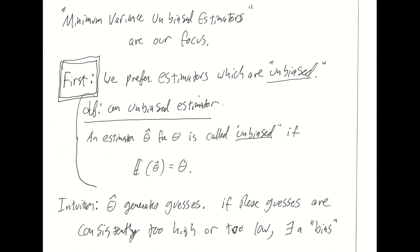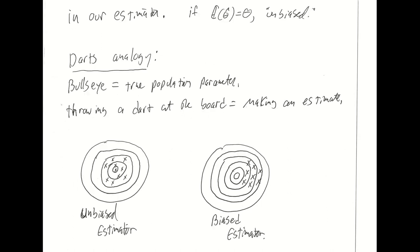The intuition is that our point estimator generates guesses for us as to what the population parameter is, and we would not want those guesses to be on average too high or too low. If this machine consistently guesses too high, we call that a bias built into the estimator. Similarly, if it consistently generates guesses less than theta, it has a negative bias. An unbiased estimator is one whose guesses are on average right on theta — it may guess too high once or too low once, but on average it doesn't guess too high more often than it guesses too low. It's not necessarily going to get it right every time, but the guesses are at least centered on the true value theta.